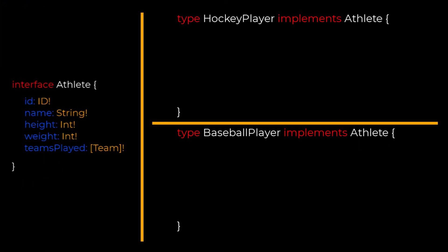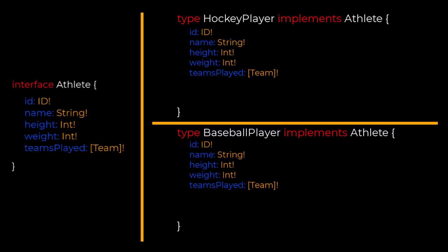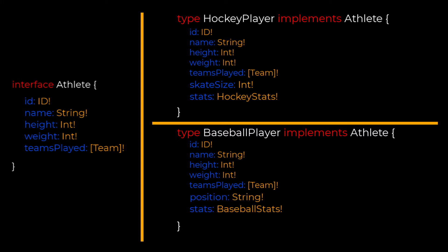What this means is that any type defined which implements our athlete interface will also need to have these fields defined. So say we have a couple of types: first, we have our hockey player type, which implements our athlete interface, and we also have a baseball player type which does the same. Now, any type implementing the interface is not limited to just those fields. For example, a hockey player type may also include skate size, goals, assists, penalty minutes, and points. Similarly, our baseball player type may include a position field and stats like strikeouts, hits, and home runs.